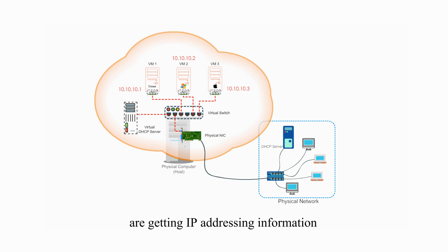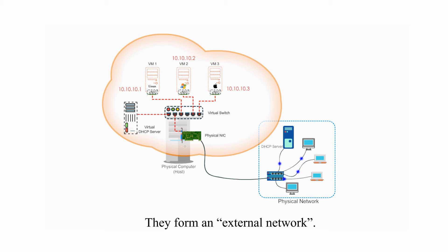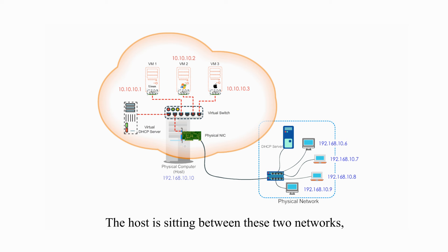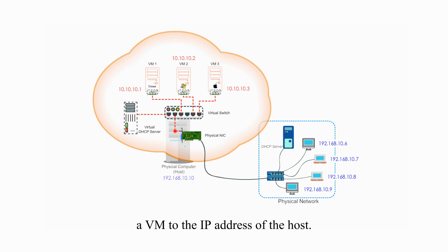And they form a private network. Other machines on the physical network are getting IP addressing information from the physical DHCP server. They form an external network.